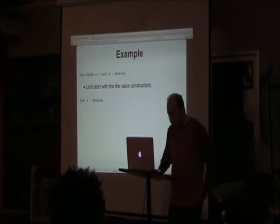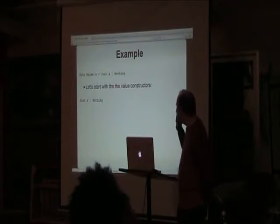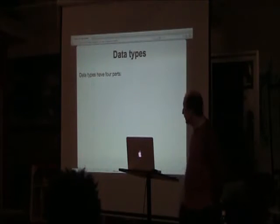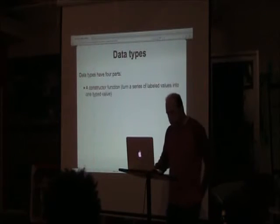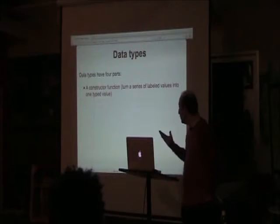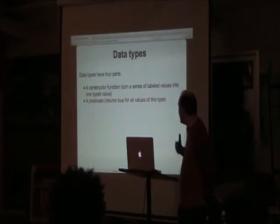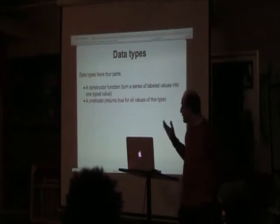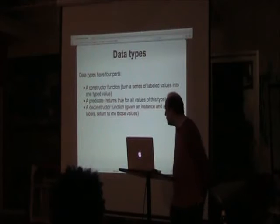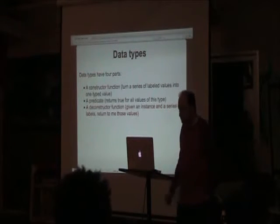Let's start from the beginning with a simple example: a Maybe type — just a value, or nothing. Data types have four basic parts. First, the constructor function: we take a series of values, organize them with labels, and create an object. Second, a predicate to tell us if an object is of that type. Third, a deconstructor function: given an instance and a series of labels, it returns the values attached to those labels.